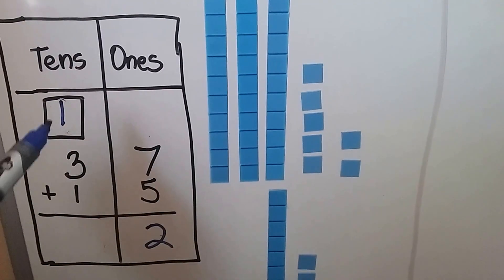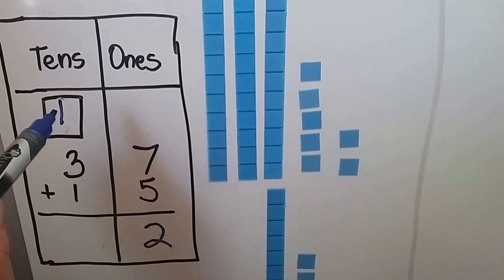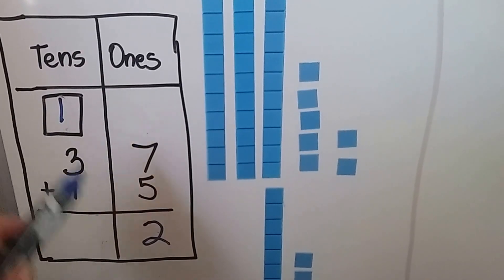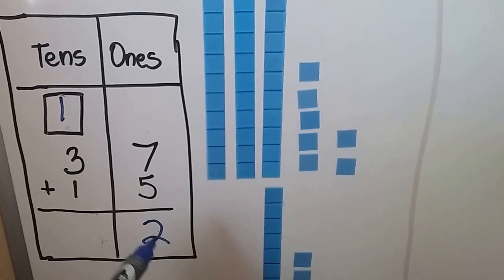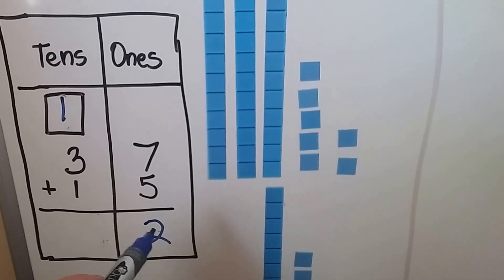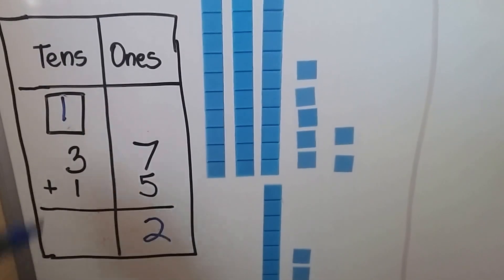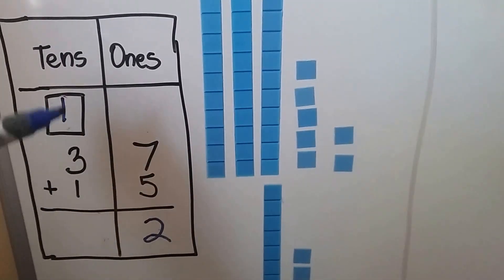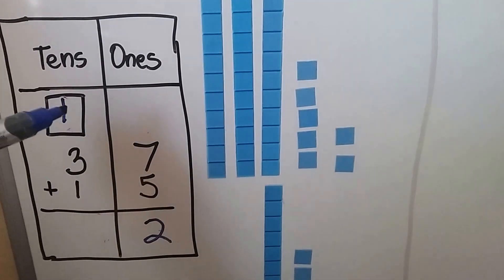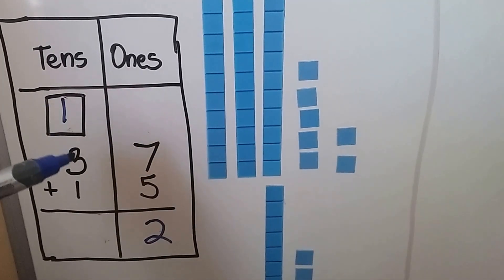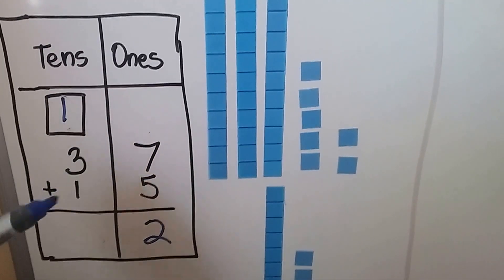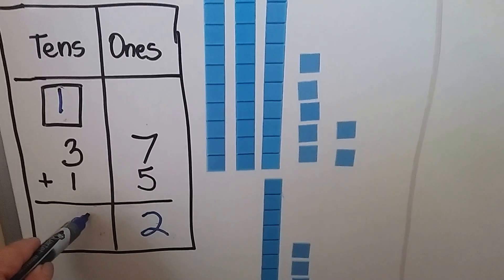We write the 10 in the tens place and the two ones in the sum in the ones place. Now we just add the tens: 1, 2, 3, 4, 5. We have 52.